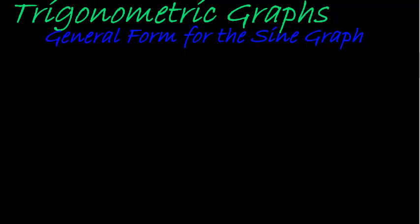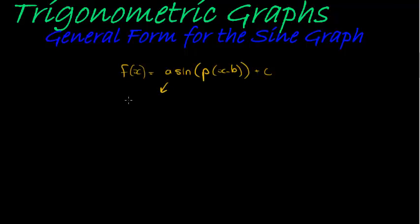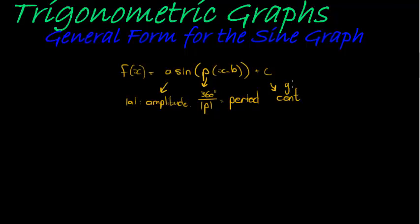Finally we get to look at the last parameter in the general form of our sine graph: f(x) = a·sine(p·(x − b)) + c. We saw that the absolute value of a gives the amplitude, that 360 degrees divided by the absolute value of p gives the period, and that c — or y = c — is the center line.